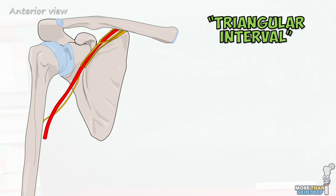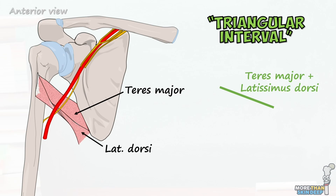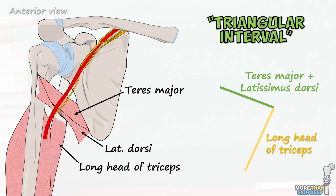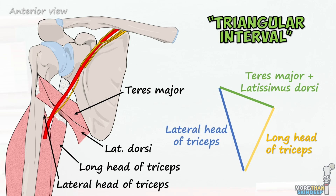The triangular interval is bounded superiorly by the teres major and latissimus dorsi muscles, and medially and laterally by the long and lateral heads of the triceps brachii muscles respectively. Passing with it through this interval is the deep brachial or profunda brachii artery.